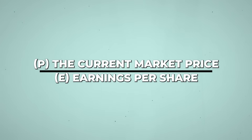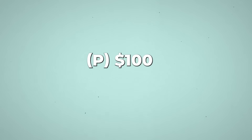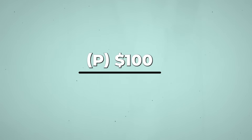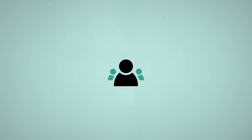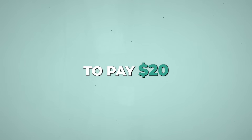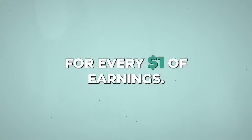Imagine it like this: if a company's stock is selling for $100 per share and its earnings per share for the past year was $5, then the P-E ratio would be 20. This means investors are willing to pay $20 for every $1 of earnings.